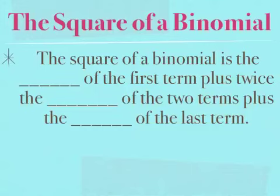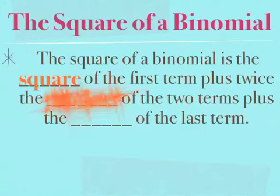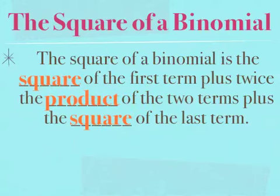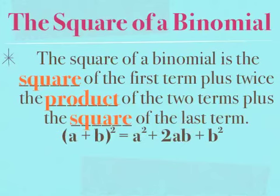The square of a binomial is the square of the first term plus twice the product of the two terms plus the square of the last term. Written in notation, if you have a plus b squared, it's going to be equal to your first term a squared, plus two times the product of your two terms, so two times a times b, plus the square of your second term, b squared.